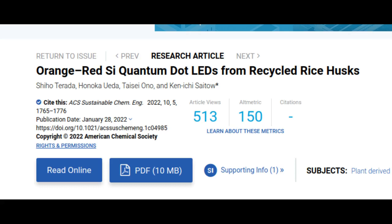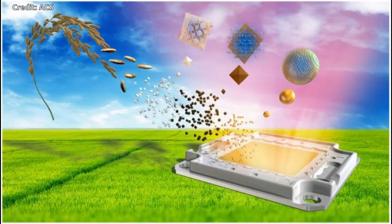Scientists from Hiroshima University created the world's first LED light by using rice husks and chemically obtained products. Milling rice to separate the grain from the husks produces about 100 million tons of rice husk waste globally each year.